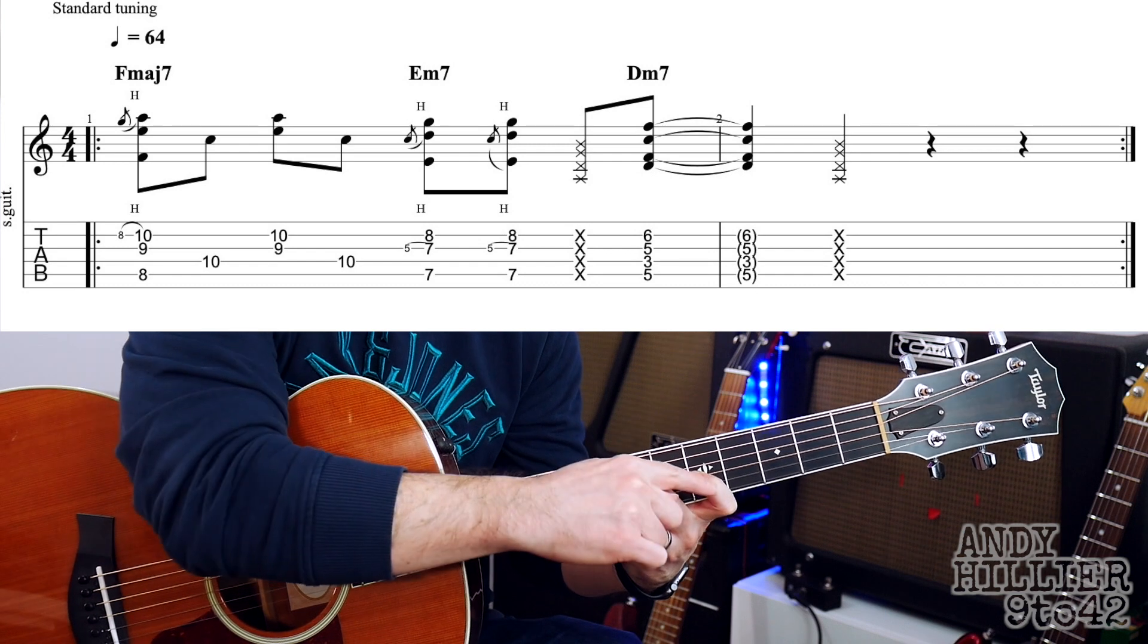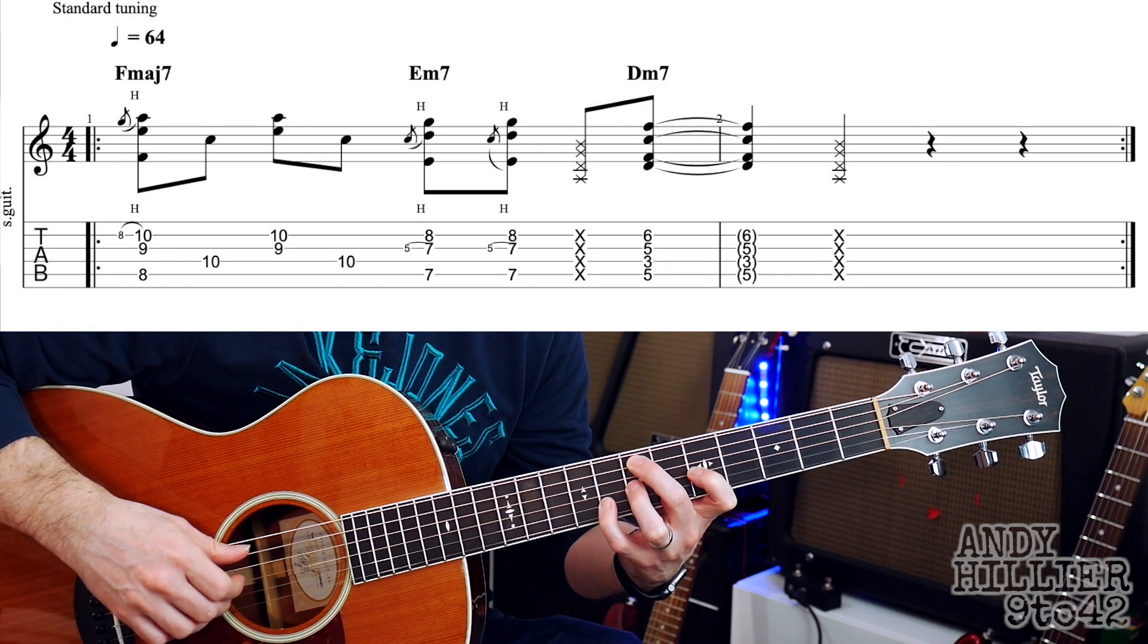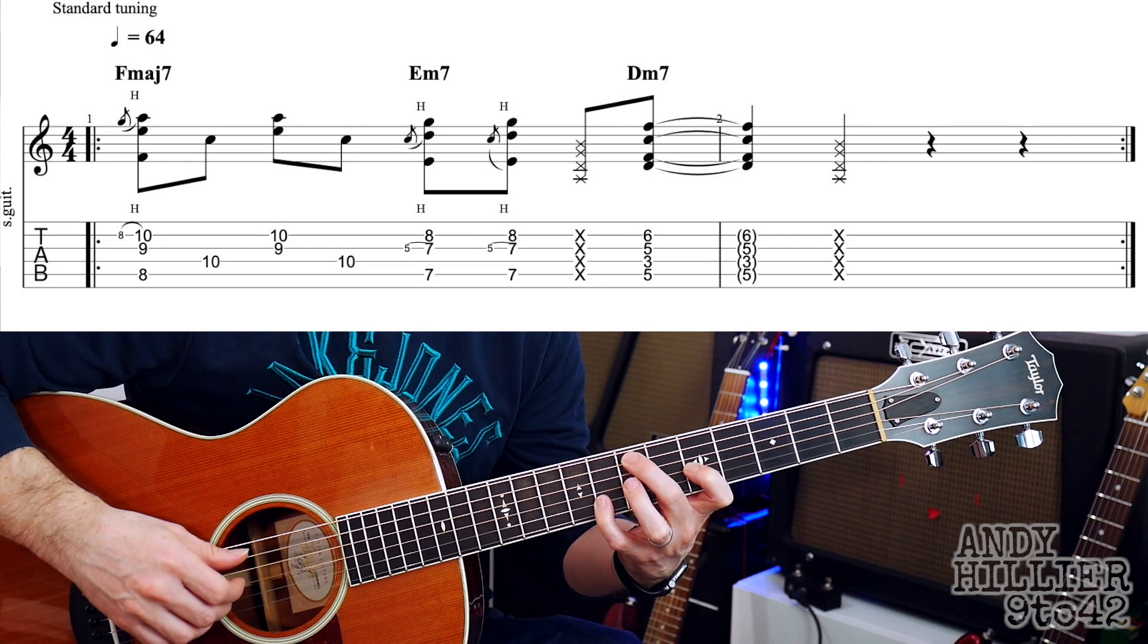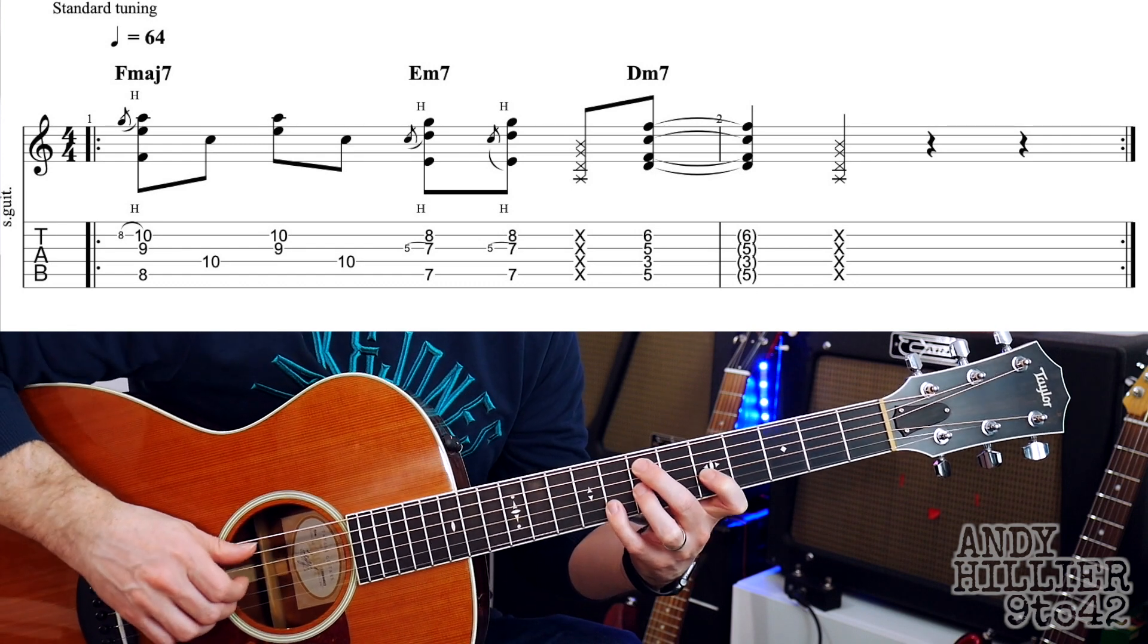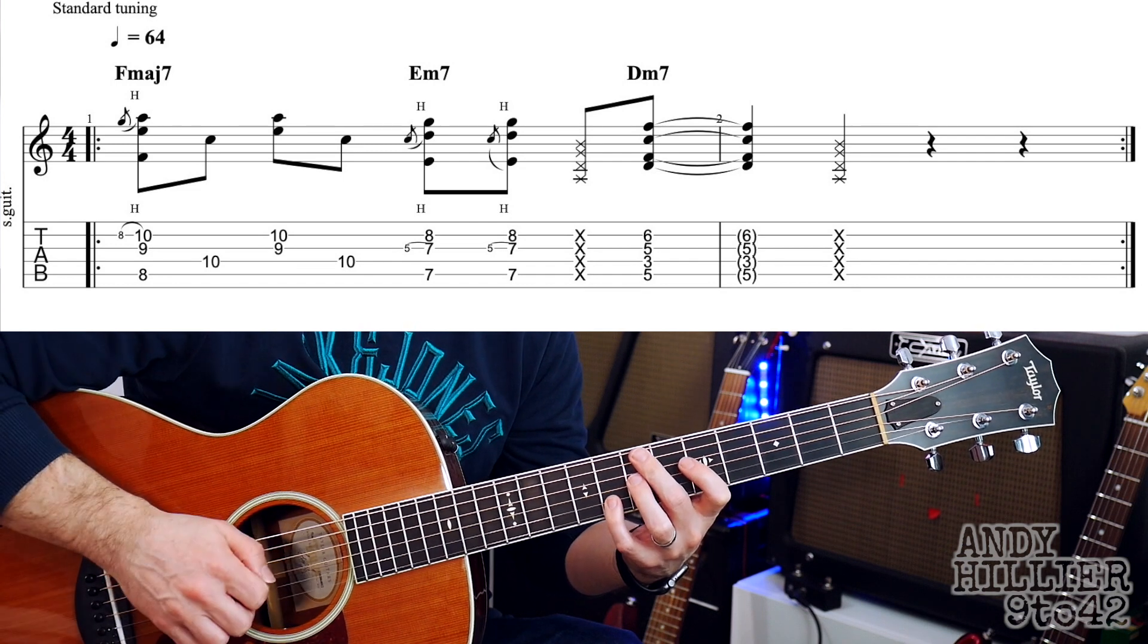The G and the B string, your first finger's on it, and then you quickly hammer-on with the third finger onto the G7. So you get this, and it does that twice, and then those X's is just a hit on the strings.